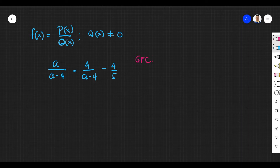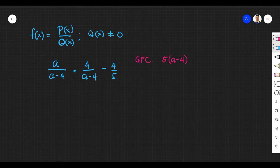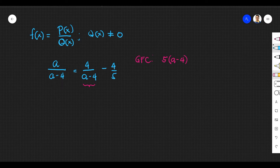The greatest common factor for our rational equation is 5 times a minus 4. To determine this, you take the denominators. If you see a denominator written twice — for example, a minus 4 appears twice — take it one time only, and also include the other denominator, which is 5. That gives us 5 times a minus 4. So let us multiply the entire equation by the greatest common denominator, 5 times a minus 4.